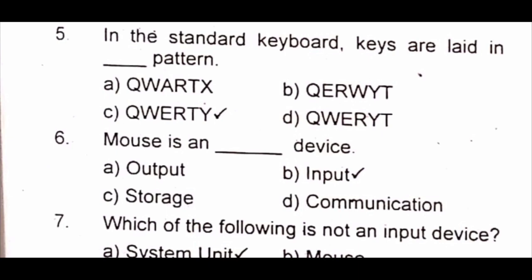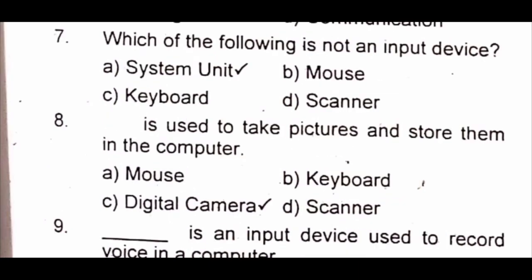Question 7: Which of the following is not an input device? A) system unit B) mouse C) keyboard D) scanner. The answer is A) system unit. Question 8: Dash is used to take pictures and store them in a computer. A) mouse B) keyboard C) digital camera D) scanner. The answer is C) digital camera.